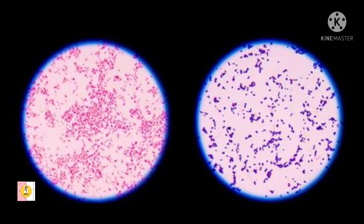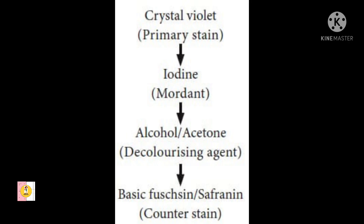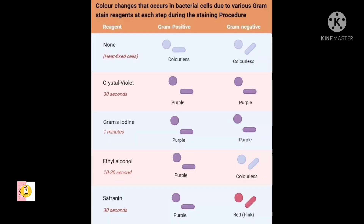Now let's talk about the procedure of gram staining. Basically there are four steps. The first step is primary staining, then mordanting, then decolorization, and the last step is counter staining.